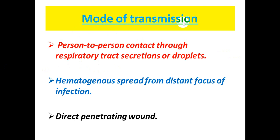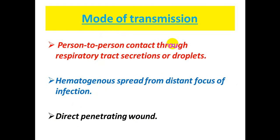The most common mode of transmission of meningitis is person-to-person contact through respiratory tract secretions or droplets. Other modes include hematogenous spread from a distant focus of infection or direct penetrating wound, but these are rare.